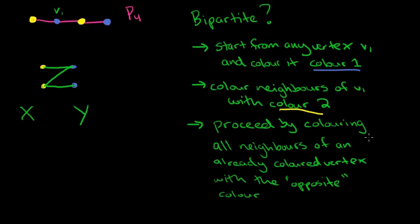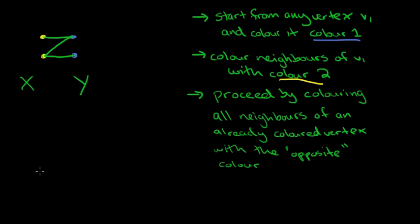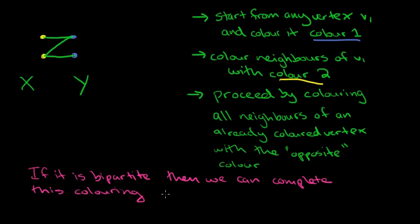So what you should really take away from this is that if the whole graph can be colored without contradiction in the way we just did, then it is a bipartite graph. And otherwise, at some point, you're going to get to a place where one of the vertices gets both colors, and that will mean it's not bipartite. So if it is bipartite, then we can complete this coloring with no contradiction.